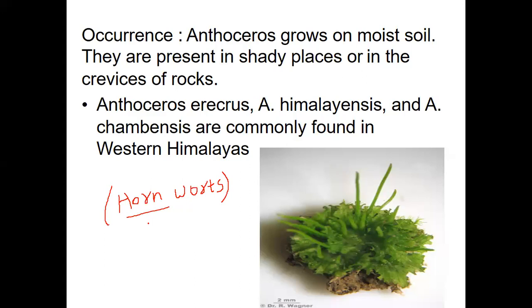Now we look into the habitat and occurrence. Anthoceros grows in moist soil — it is also a terrestrial plant, just like Marchantia, growing on moist soil. They are present in shady places and in the crevices of rocks. The common species found in India are Anthoceros erythrorhizus, Anthoceros himalayensis, and Anthoceros fusiformis. These are the three commonly found species in the Indian regions of the western Himalayas.